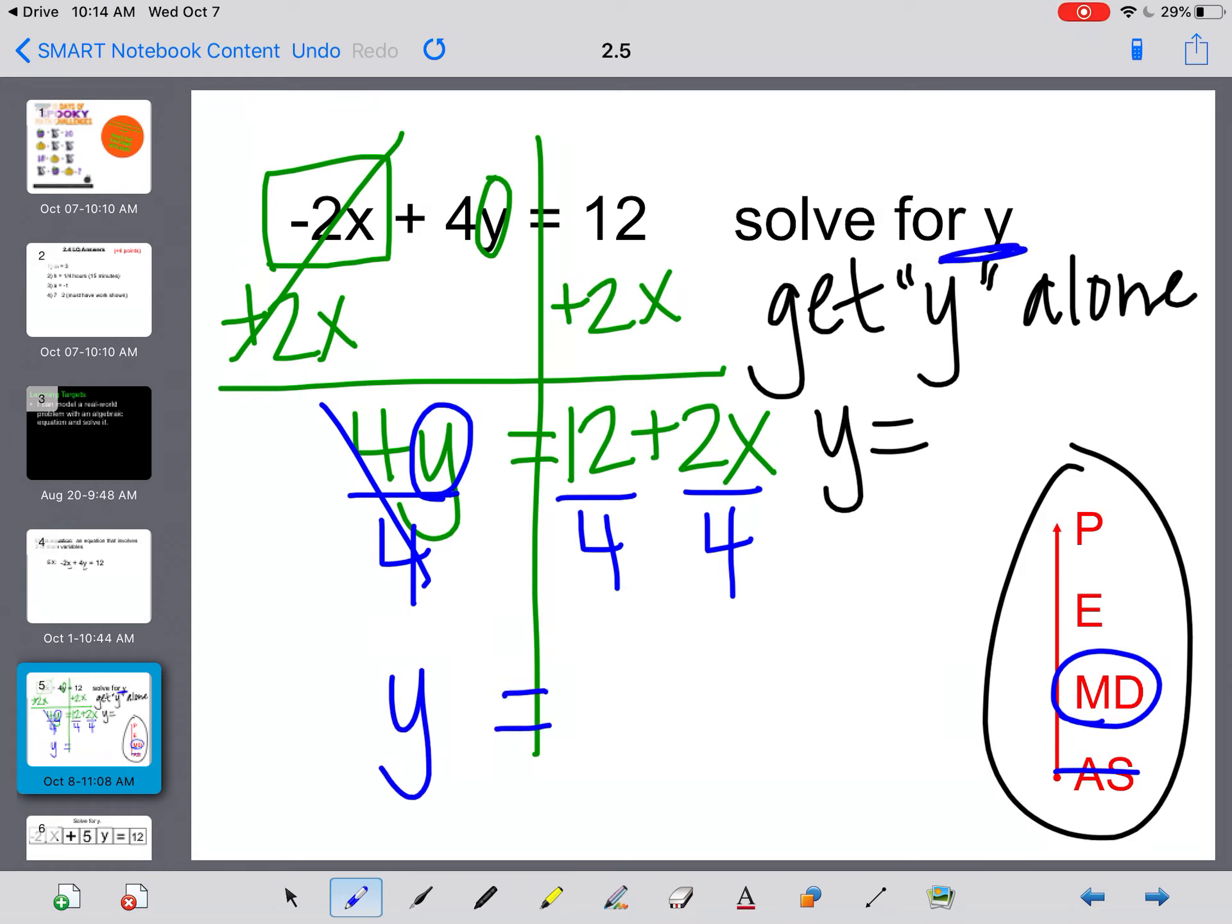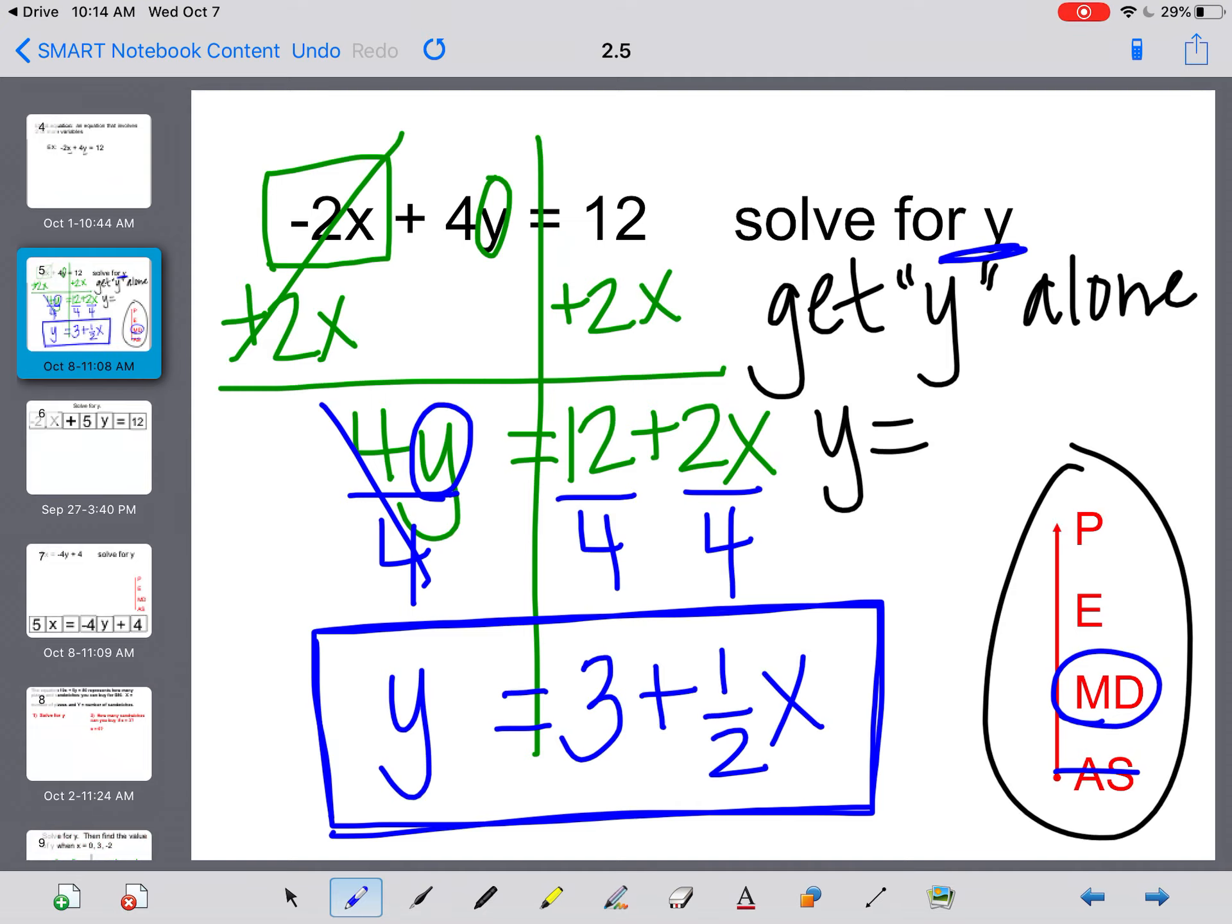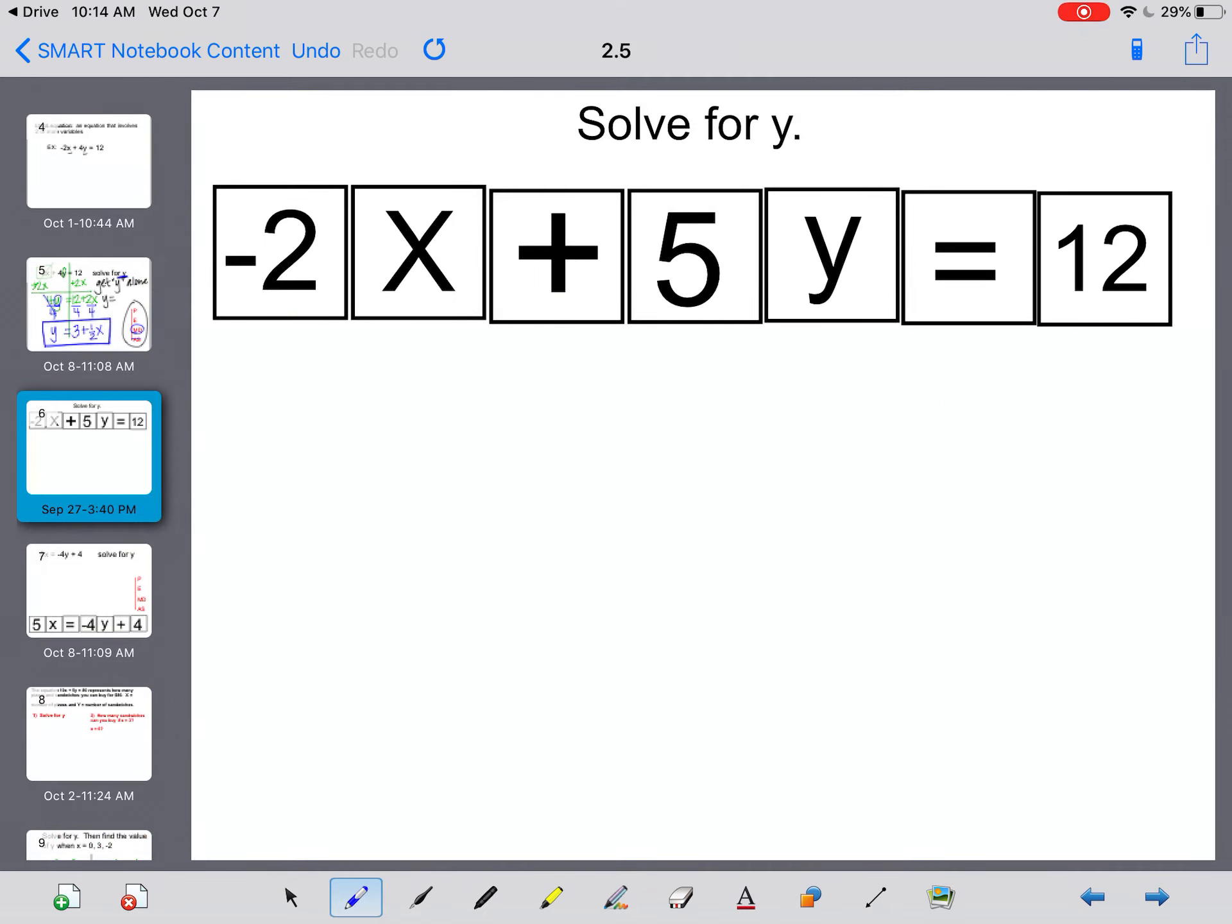On the left, that will cancel this out, leaving me with just the y, which is what we wanted. On the right, I'm going to do 12 divided by 4, which gives me 3. And 2x divided by 4 gives me 1 half x. Because I have y all by itself, and I have nothing else that I can combine, this is my final answer. That is what they were looking for when they asked you to solve for y.